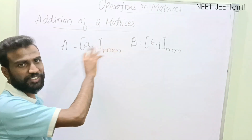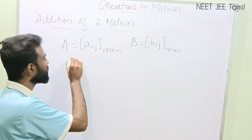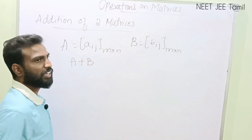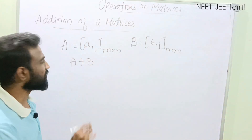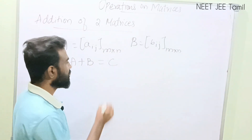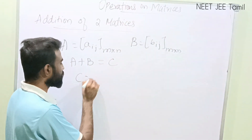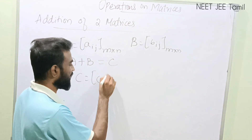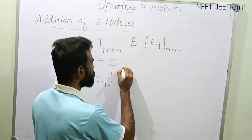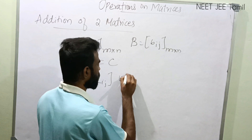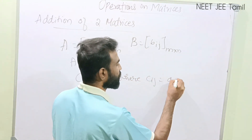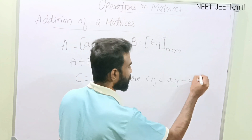How do we add these two matrices? We add A plus B and we will get a resultant matrix called C. What is this C? The elements of C are written as C of ij, where C of ij is equal to A of ij plus B of ij.